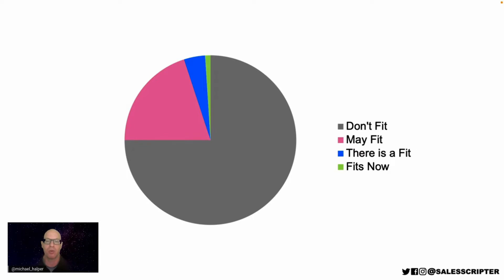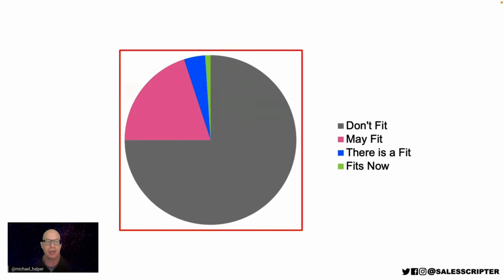Knowing which slice they're in helps with decision making about where to spend our time, what prospects to walk away from, and what prospects to invest a lot of valuable time in. When you're product selling and selling to everybody, you can fall into the trap of not asking enough questions and not qualifying enough, which leads to a lot of wasted time.